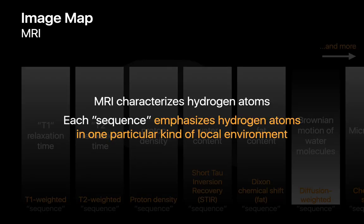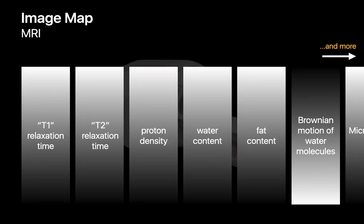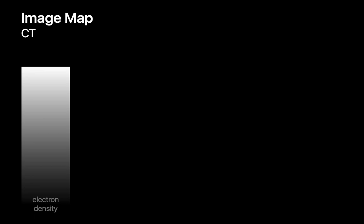All of these different sequences share one thing in common: they're all about imaging hydrogen atoms. What makes each sequence distinct is that each emphasizes different populations of hydrogen atoms in the body, which allows us to create image maps of different properties such as T1 relaxation time, proton density, fat content, and more.